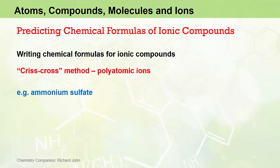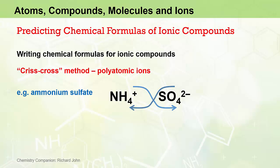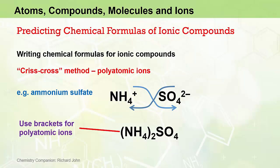Let's look at another example: ammonium sulfate. The ammonium ion is a polyatomic cation that has a +1 charge with the formula NH₄⁺. Sulfate is another polyatomic ion — an anion — with a charge of 2−. Using the crisscross method, we bring the 1 from the 1+ ammonium ion down as a subscript for sulfate, and the 2 from the 2− sulfate down as the subscript for ammonium. So we need two ammoniums and one sulfate. We use brackets for polyatomic ions where there is more than one in the formula, but since there is only one sulfate ion, no brackets are needed for the sulfate part, giving (NH₄)₂SO₄.